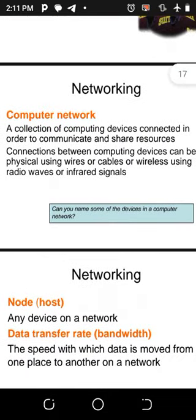What is networking? A network is a collection of computing devices connected in order to communicate and share resources. Connections between computing devices can be physical, using wire or cable, or wireless, using radio waves or infrared. I have a question for you: can you name some of the devices in a computer network? Post the video and type your answers in the comment box below.